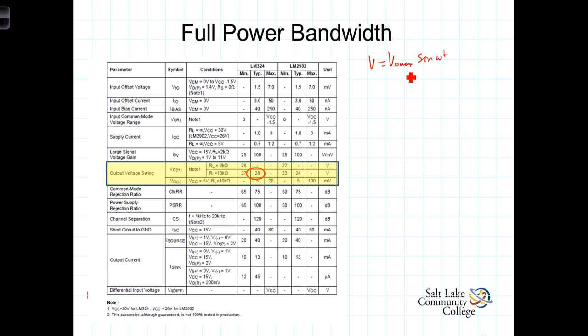Now, the maximum rate of change, dV/dt max, will occur when I take the derivative of this. We're going to have omega Voutmax times cosine of omega t, and of course this has its maximum at t equals zero.